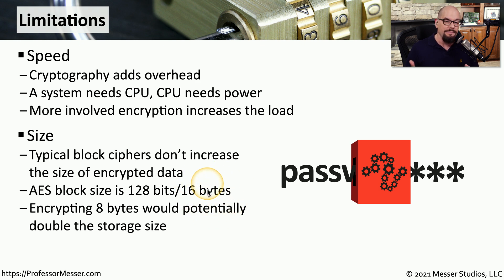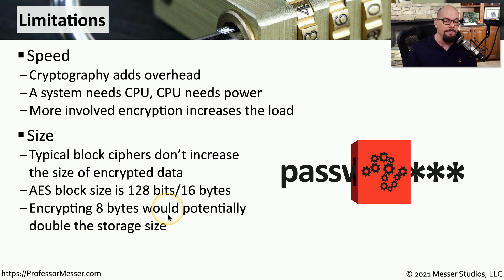If the block cipher is 16 bytes in size, then the amount of data being encrypted has to be 16 bytes as its plain text. That means we would have to add another eight bytes, which would effectively double the storage size of what we happen to be saving.